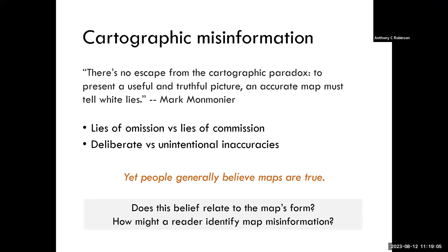I want to talk about the idea of cartographic misinformation. Mark Monmonier has a nice quote basically saying that every map lies. That's true to a certain extent — we don't represent everything about the world, and that's part of the power of maps. But we can think about lies of omission and lies of commission: what do we leave out? A lie of commission might be if we have exaggerated something. We can also think about deliberate or unintentional inaccuracies in maps, and whether there was intent by the cartographer to paint a particular picture.